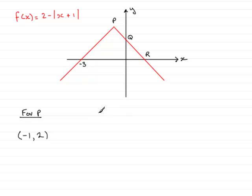Now for q, q is where the graph crosses the y axis and this will be when x is 0. So what we need to do is work out f of 0. And f of 0 will be 2 take away the mod of 0 plus 1, in other words, the mod of 1, which is clearly 1.